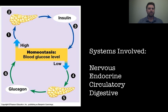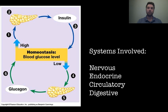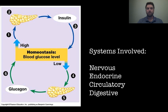Here's the blood glucose feedback loop with its figure-8 shape. When blood glucose levels get too high, the pancreas secretes insulin, which lowers glucose levels. When they get too low, insulin levels drop and the pancreas secretes glucagon, which raises levels back up. The systems involved are the nervous system to detect changes, the endocrine system to secrete insulin and glucagon, the circulatory system to deliver those hormones, and the digestive system — including the liver — to store excess glucose or release it back.